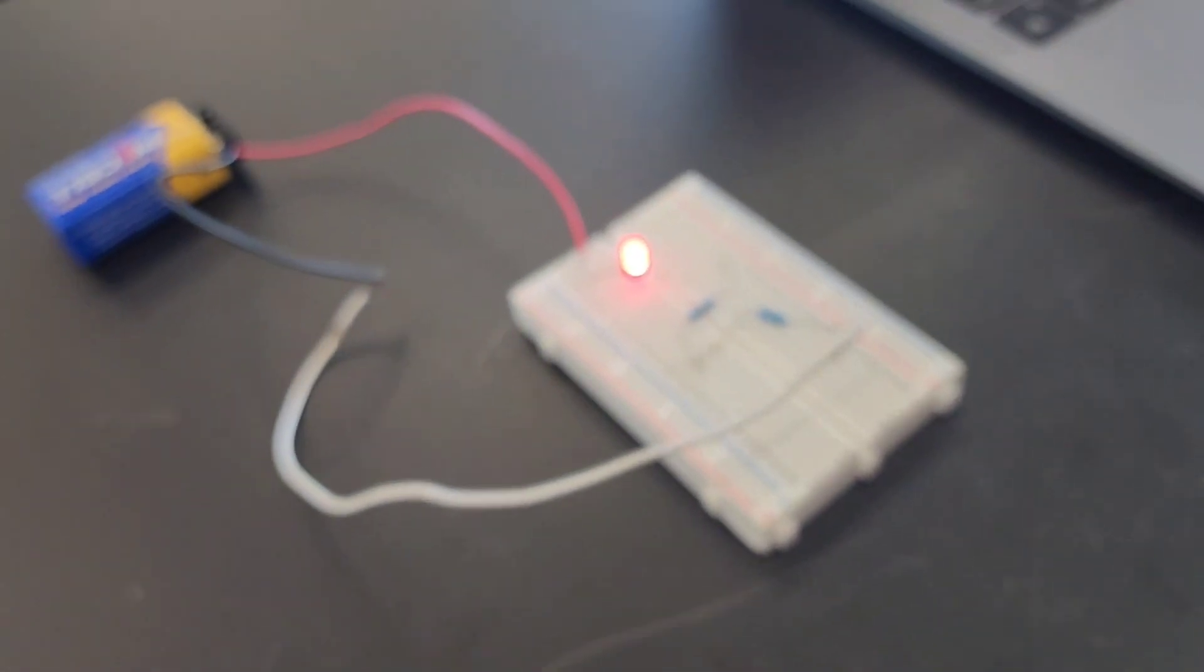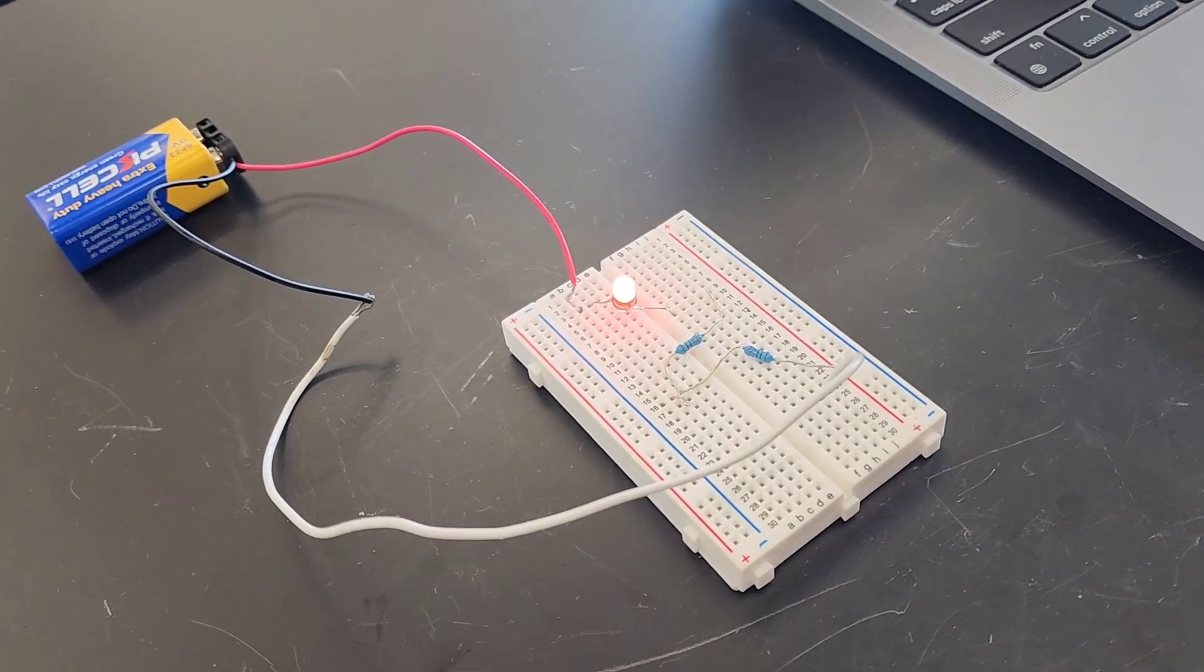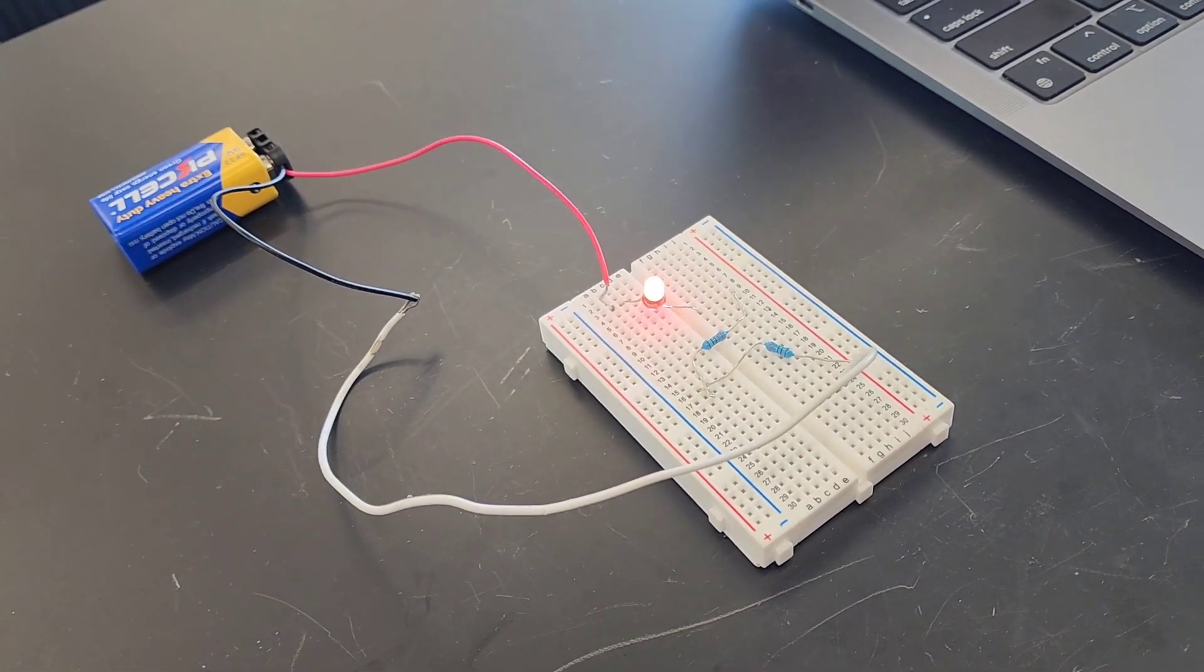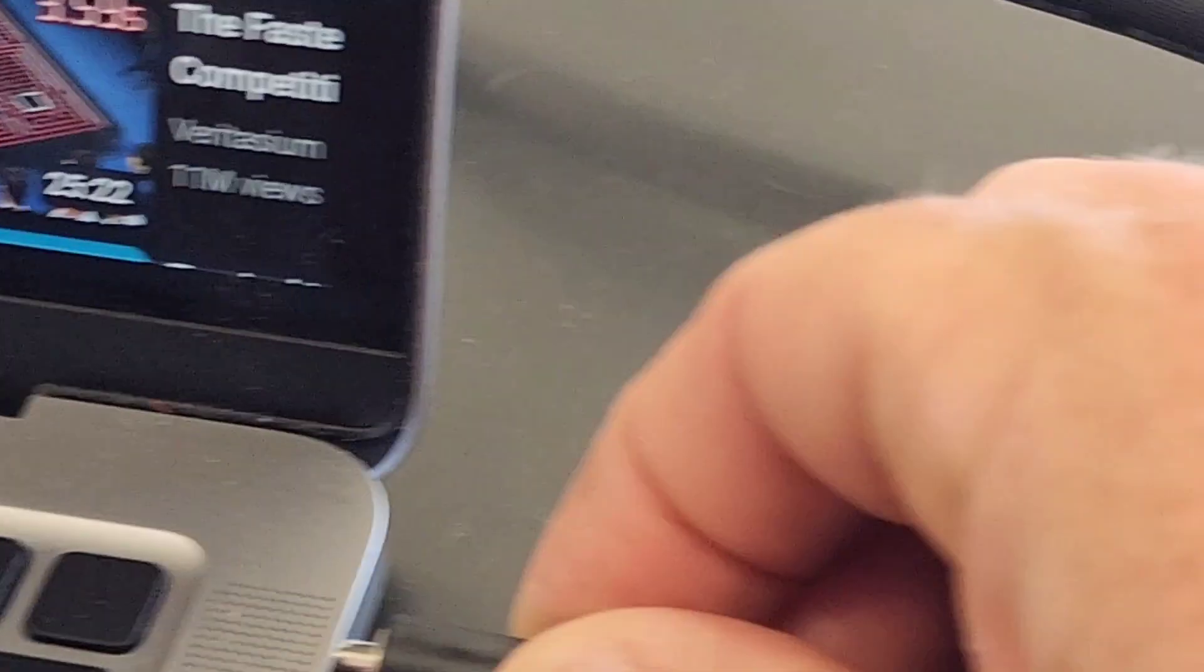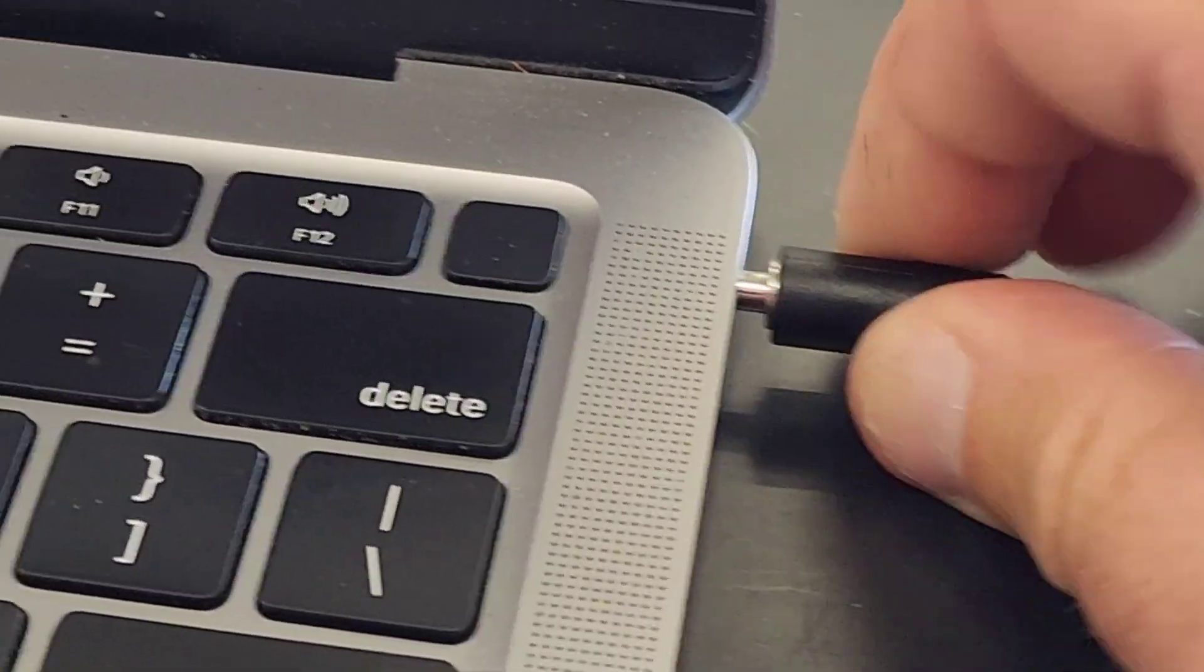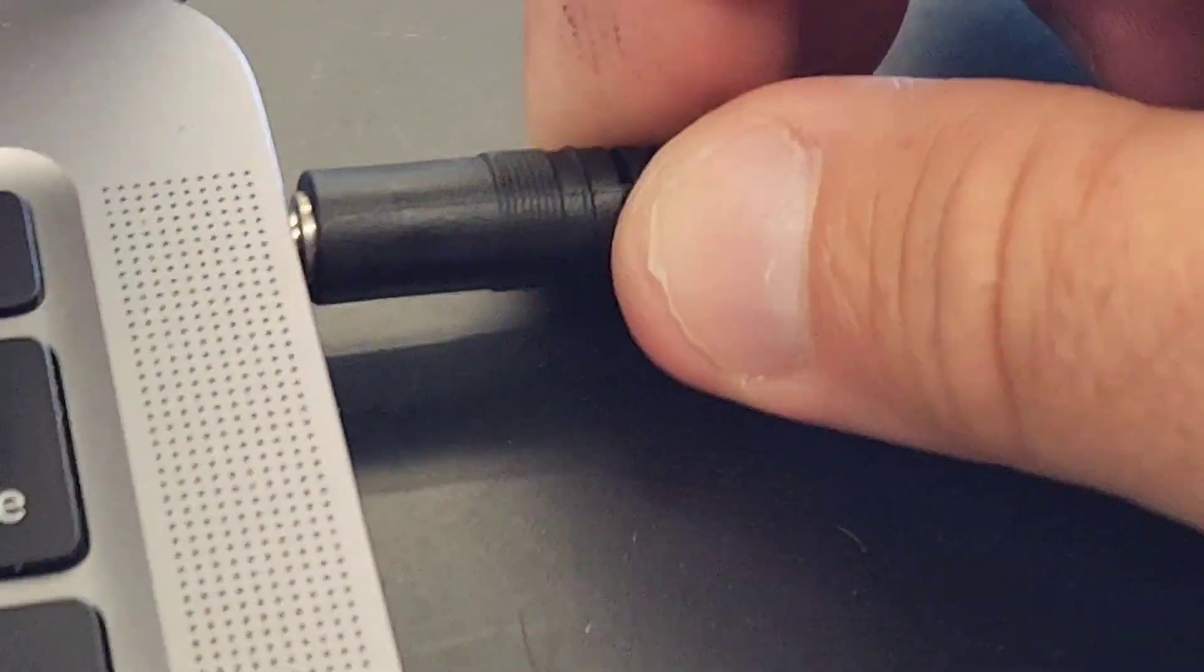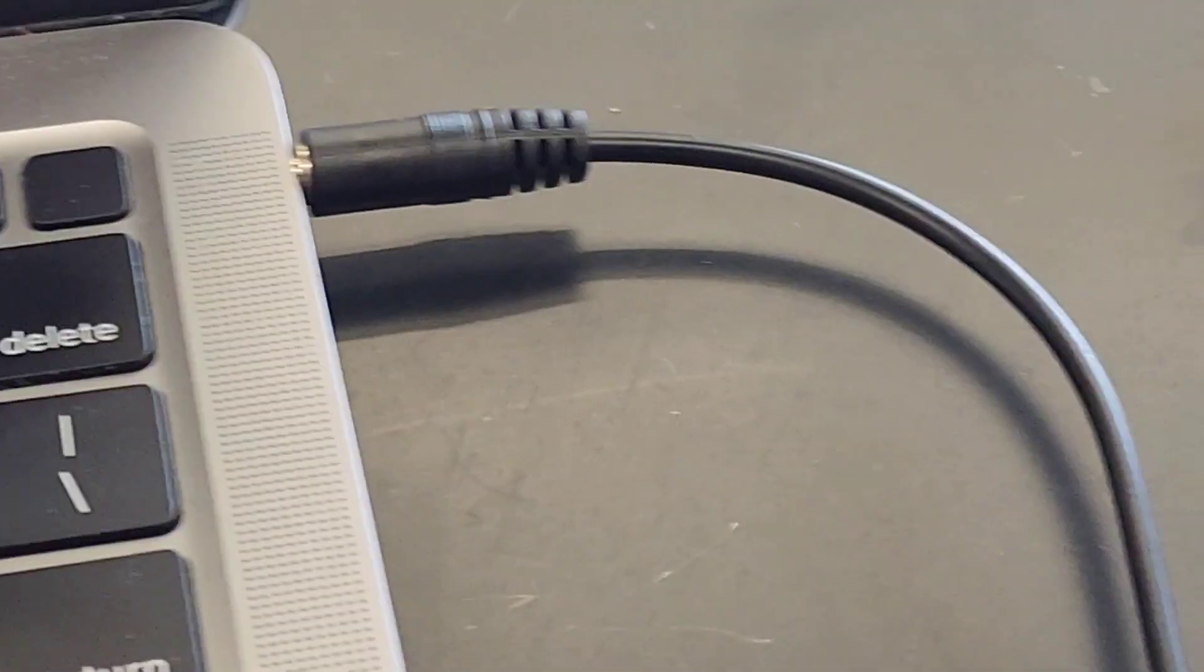What we're going to do now is add a little something to this circuit. Over here at the computer's headphone jack, we're going to plug in a wire, but this time instead of the headphone jack being connected to a pair of headphones, I've cut the cable and the signal from the cable is going into these wires right here.